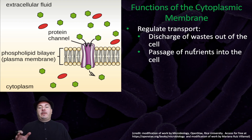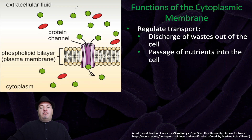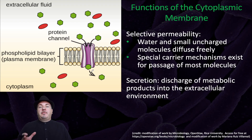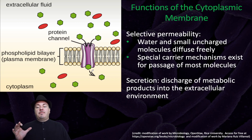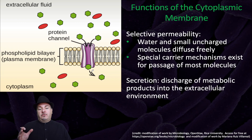Another function of the cytoplasmic membrane is to regulate transport. Bacteria cells need to be able to get rid of waste and bring in nutrients, which they do by passing substances through the cytoplasmic or plasma membrane. One example is channel proteins embedded in the membrane that allow certain substances, like glucose, to enter the cell. The cytoplasmic membrane exhibits selective permeability, meaning water and small uncharged molecules can diffuse freely in and out, but there are special carrier mechanisms for the passage of most molecules. The membrane is also used for secretion — the discharge of metabolic products into the extracellular environment.